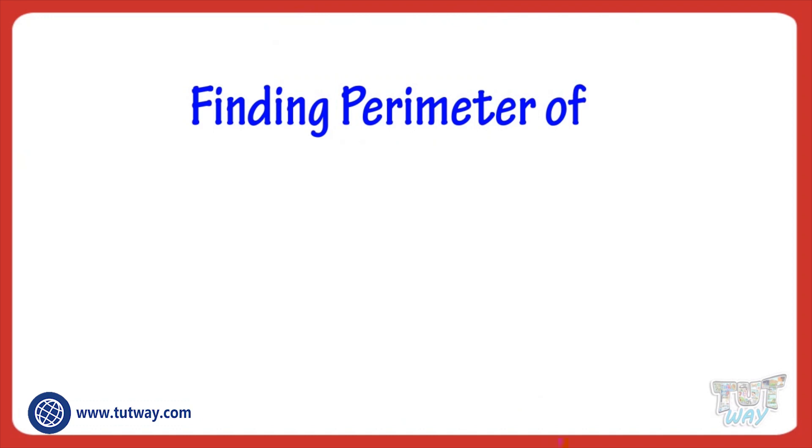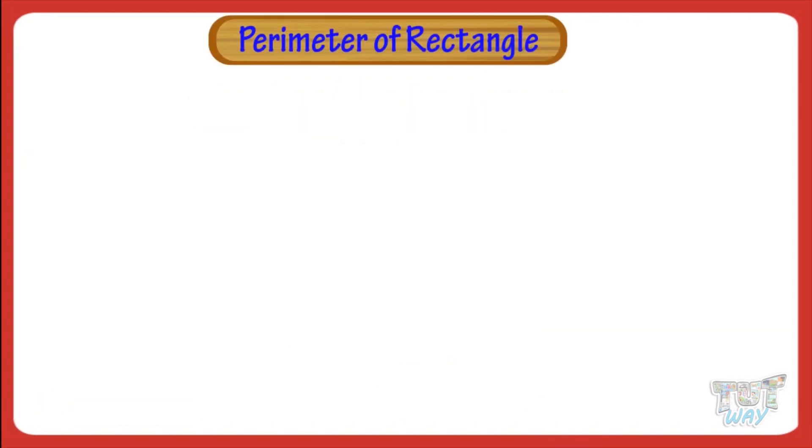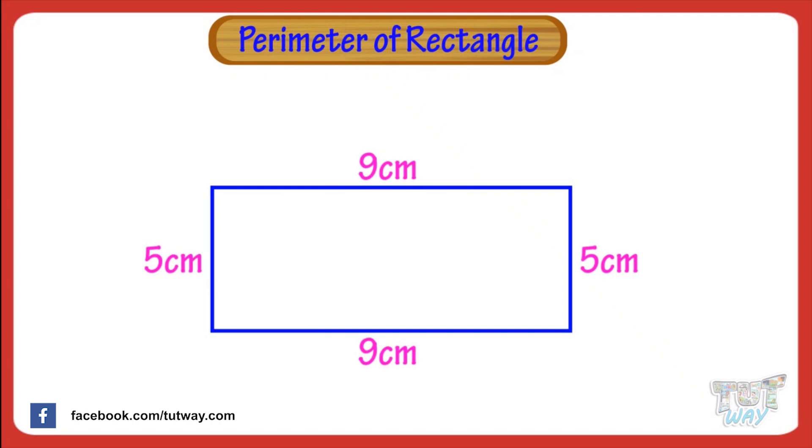Today we will learn finding the parameter of rectangle. We know rectangle has four sides, but all sides are not equal. Its opposite sides are equal. Two of its opposite sides are smaller than the other two sides.